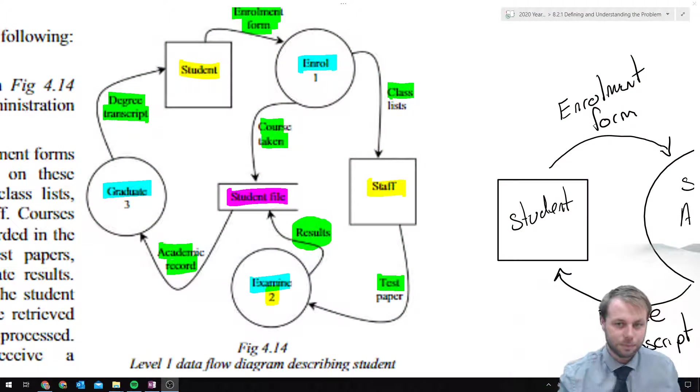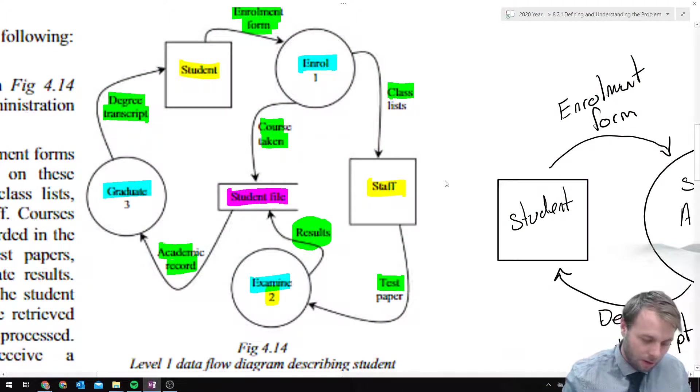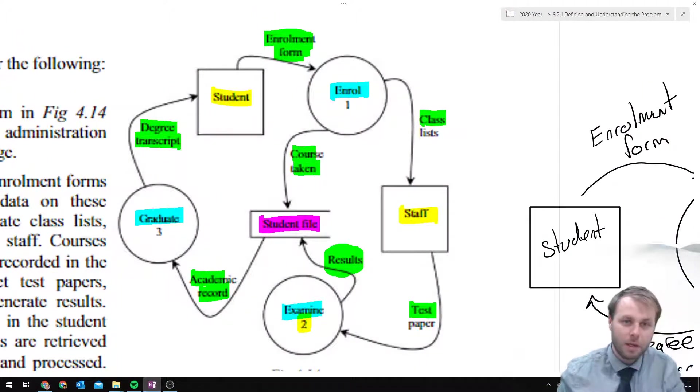So let's jump across and have a look at our data flow diagram. The data flow diagram that we've got here, as we looked at in the last video, is broken into three processes: enroll, examine, and graduate. We've got our two external entities here.